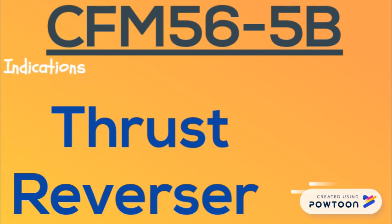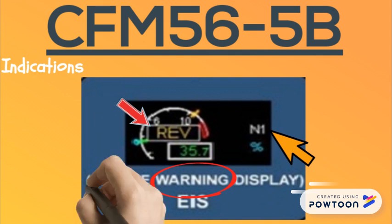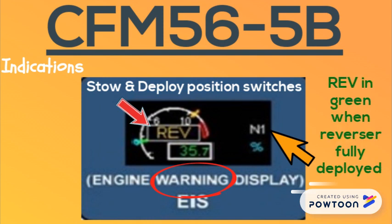Thrust reverser system indication: to indicate the actual state of the thrust reverser, it is shown on the ECAM warning display. You can find reverser indication in the middle of the N1 dial, and the signals come from the stow and deploy position switches. Keep in mind that reverse thrust is allowed when reversers are deployed.